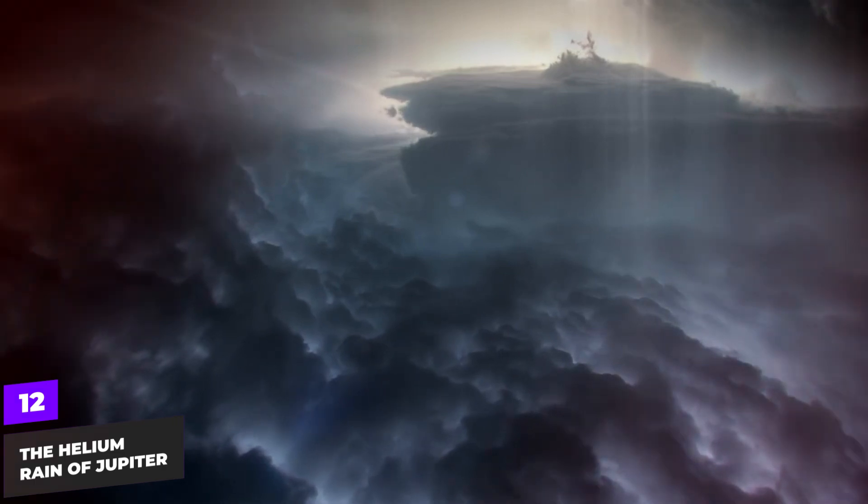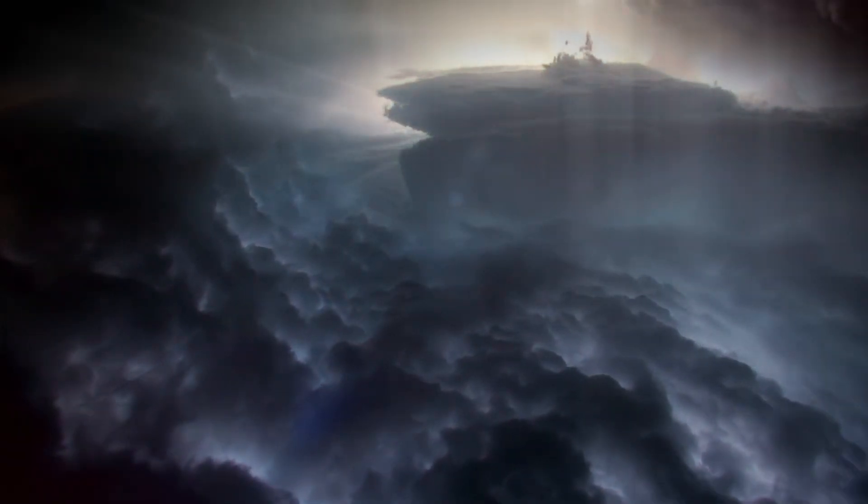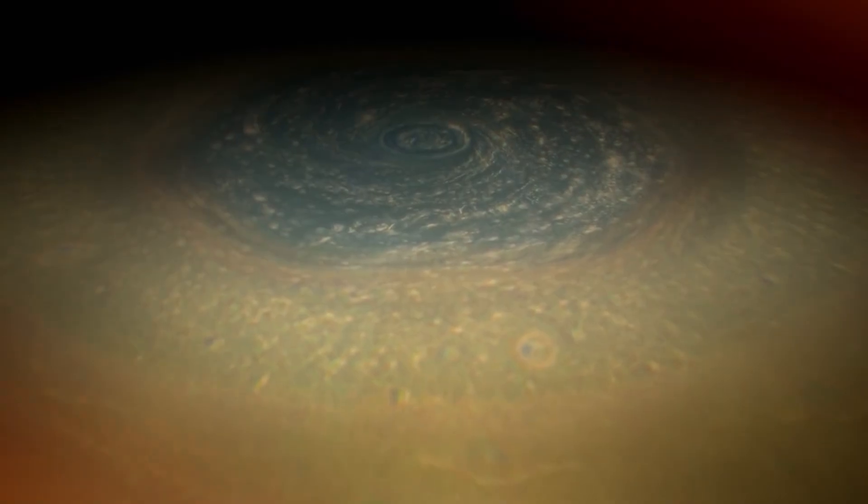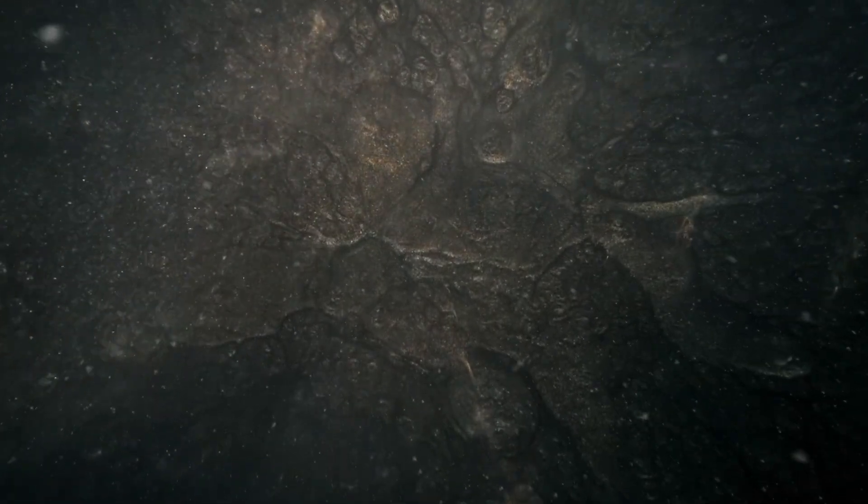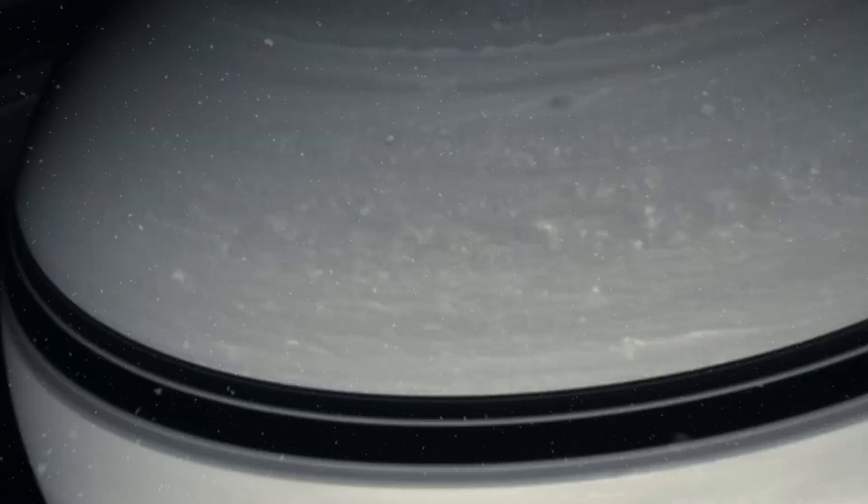The helium rain of Jupiter. Beneath Jupiter's massive clouds, the pressure becomes so intense that helium rains down through layers of metallic hydrogen. This strange rain contributes to the planet's distinct layers and dynamics.